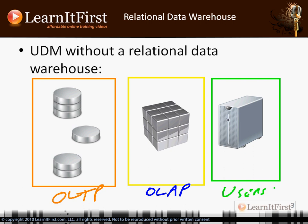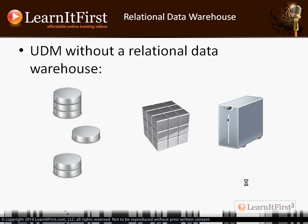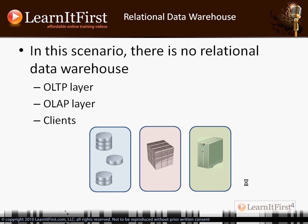In our model, the client interface was a reporting server, but it could also be someone using Excel and hooking directly up to the cube. In this example, there is no relational data warehouse - only a multi-dimensional data warehouse. So there are really three layers: an OLTP layer, an OLAP layer (multi-dimensional), and then the clients.